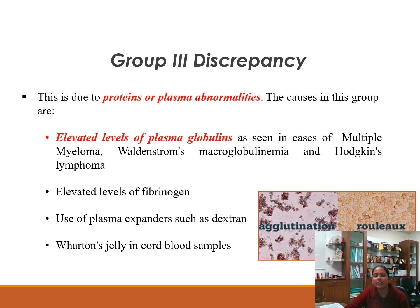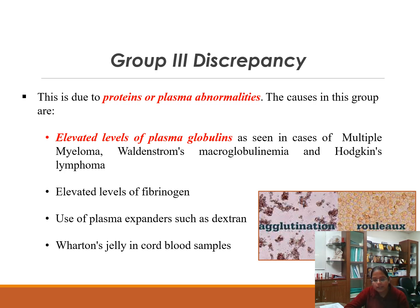Group 3 discrepancies are due to protein or plasma abnormalities, seen in multiple myeloma, Waldenström's macroglobulinemia, Hodgkin's lymphoma — conditions with elevated plasma globulins. They may also be associated with raised fibrinogen, use of plasma expanders such as dextran, or contamination in neonatal cord blood samples due to Wharton's jelly.